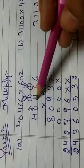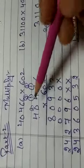2, 4 is 8. 8 plus 1, 9. 2, 0 is 0. 2, 4 is 8.